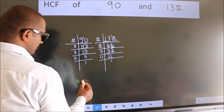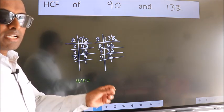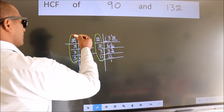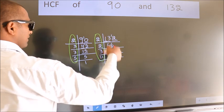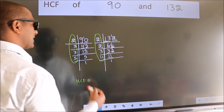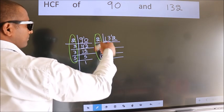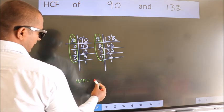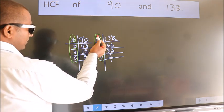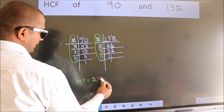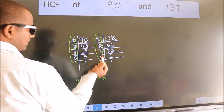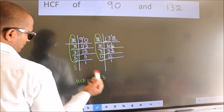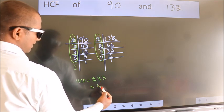Therefore, our HCF is the product of the numbers which are present in both factorizations — here and here. Starting with 2: do we have 2 in both? Yes. Cut 2. Next number, 3: do we have 3 in both? Yes. Cut 3. Next number, 3: do we have another 3? No. Next number, 5: do we have 5? No. No more common numbers. So our HCF is 2 into 3, which equals 6.